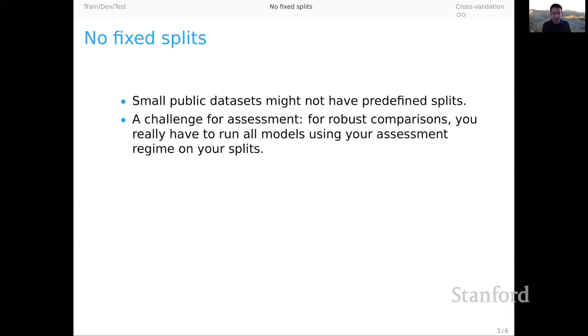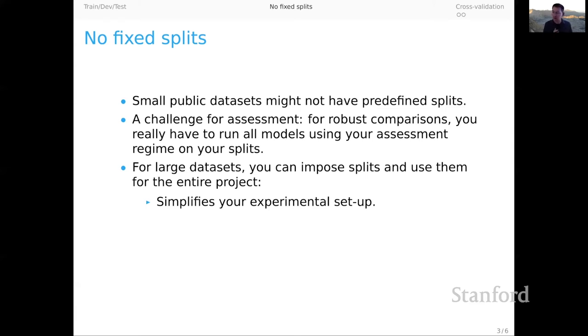So that's something to keep in mind. And it does mean that if you can, for your own experiments, you might impose a split right at the start of your project. This is probably feasible if the data set is large. And what it will mean is that you have a simplified experimental setup, and you have to do less hyperparameter optimization just because there are fewer moving parts in your underlying experimental setup.